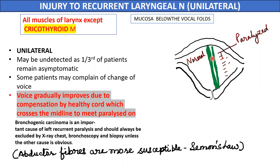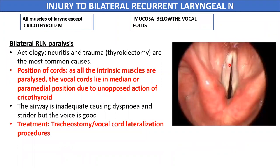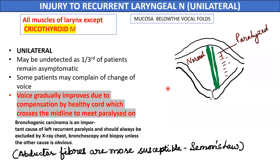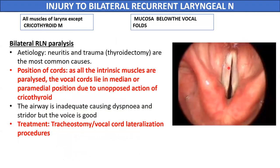If the injury is bilateral — both recurrent laryngeal nerves involved — both vocal cords lie in the median or paramedian position close to each other and abduction cannot occur. The air passages cannot be maintained and the patient will have dyspnea or stridor. Tracheostomy must be performed to maintain the airways. In summary, unilateral injury does not cause much problem as normal phonation and respiration are possible, but bilateral injury requires tracheostomy as air entry is blocked.